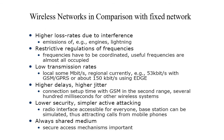Wireless networks compared to fixed networks: wireless networks have higher loss rates due to interference, making packet recovery generally very difficult. There are also restrictive regulations of frequencies, and end-to-end communication may not always be maintained — loss or drop of packets can occur in between the network. Low transmission rates also apply — locally some megabits per second, regionally currently 53 Kbits with GSM.